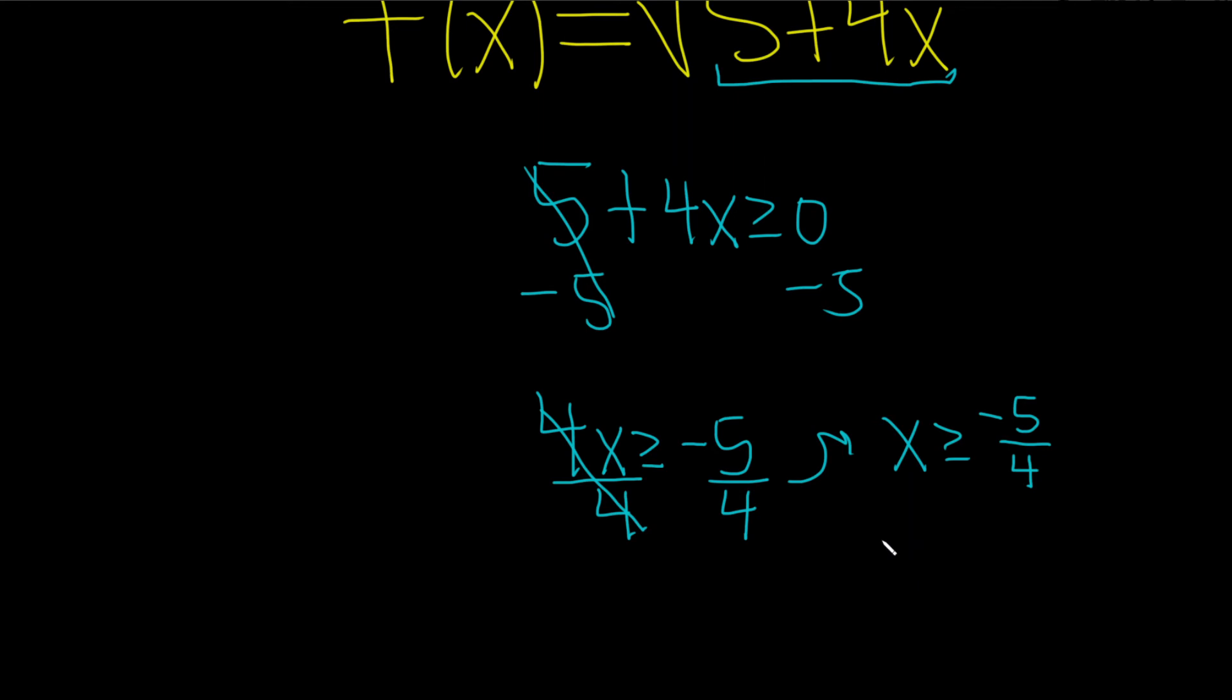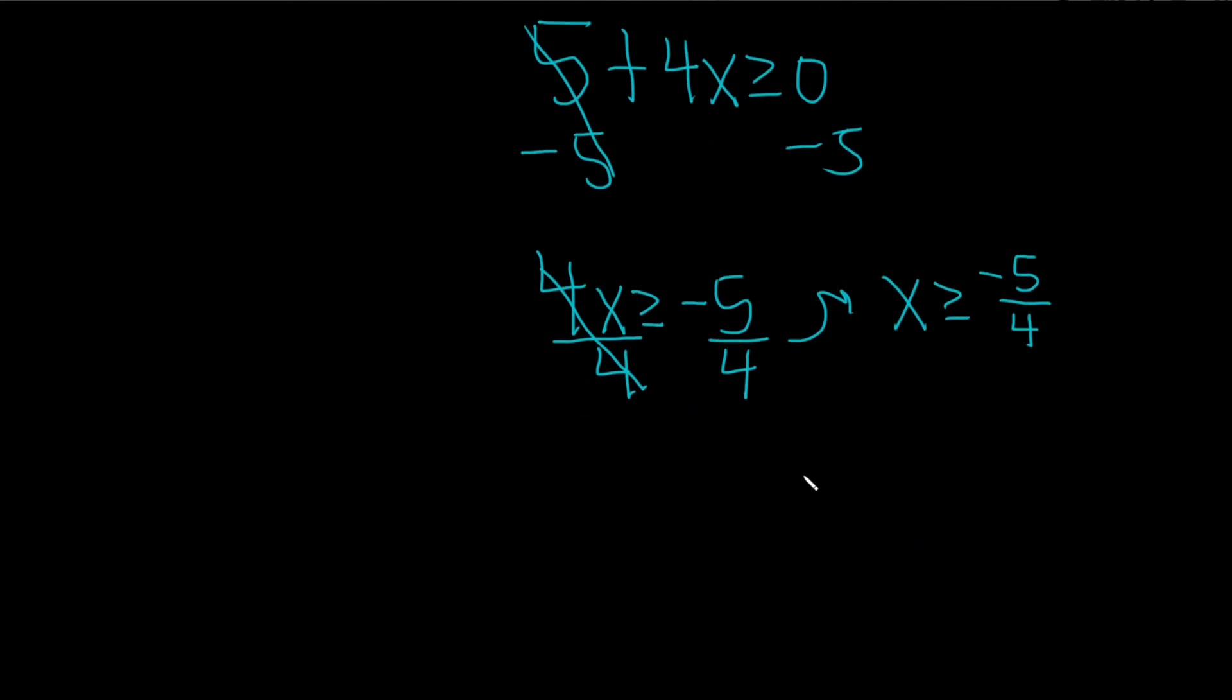And to write our answer in interval notation, what you can do if you want is draw a picture. So here's negative 5 fourths. And it's all of the numbers bigger than that. So it's all the ones over here.